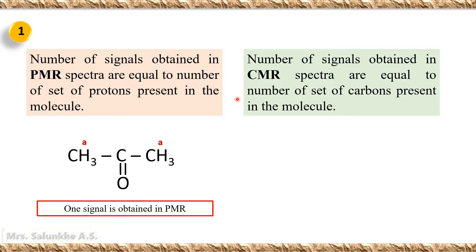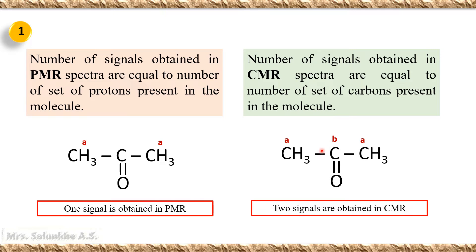While in case of CMR spectroscopy, the number of signals obtained in the CMR spectra are equal to the number of sets of carbon atoms present in the molecule. Considering the same acetone example, there are two sets of carbon atoms: the carbon atoms of the methyl groups, which are equivalent, and the carbonyl group carbon. Thus, we get two signals in CMR.